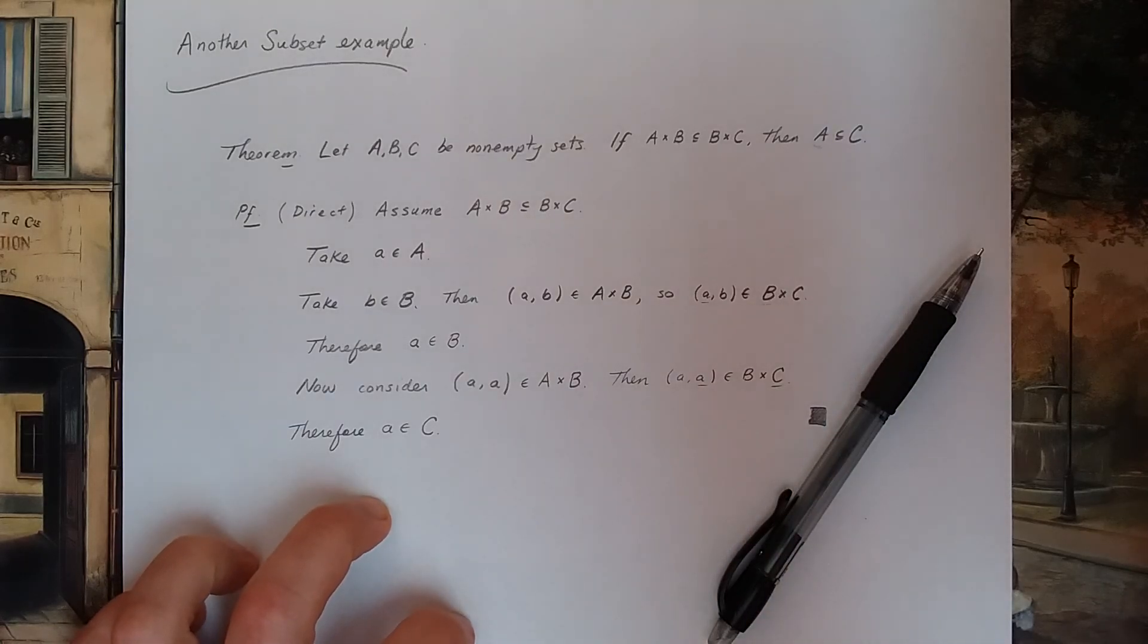If I didn't put this non-empty set statement, this line where I said take b in B might have been suspect. So watch out for that. You don't want to take elements in empty sets. That's where sometimes proofs fall apart.